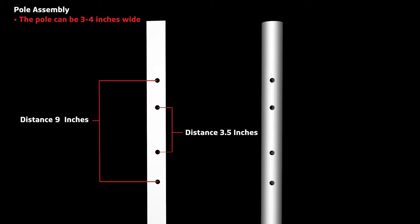You will need to drill a total of four holes on the pole. The distance from the top hole to the bottom hole is nine inches. The distance between the two center holes is 3.5 inches.